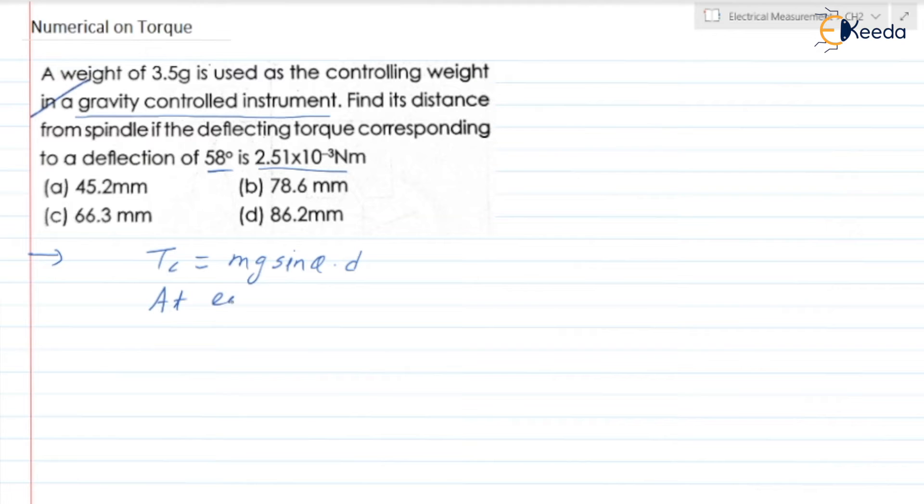At equilibrium we know Tc is equal to Td. What is Tc? mg sin theta into d which is equal to Td, the deflecting torque.